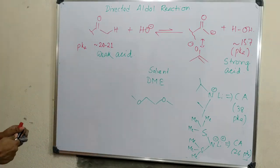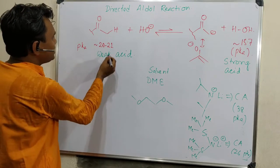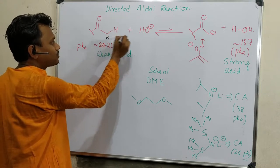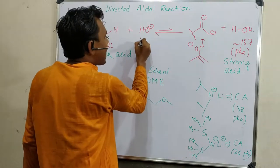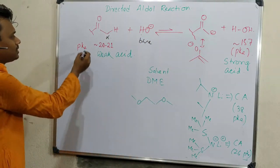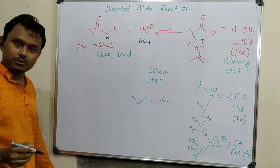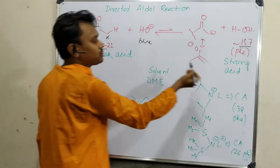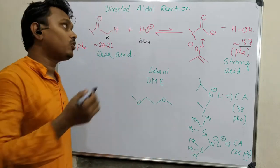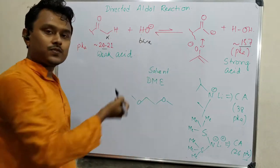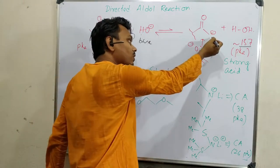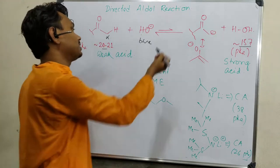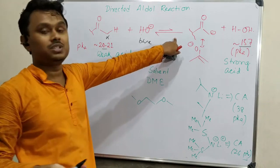In Directed Aldol Condensation, the main basic scheme is the reaction of an alpha-carbonyl compound having an alpha-hydrogen with a base to produce an enolate and water. The pKa of this carbonyl is around 20-21, while the pKa of water is 15.7. This means a weak acid is producing a strong acid, which is not thermodynamically feasible. Consequently, the equilibrium remains on the left side.